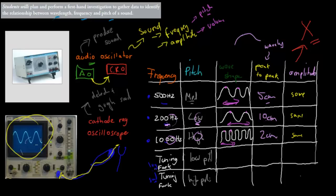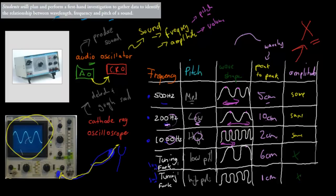You would look at the shape produced by the different tuning forks on the CRO. The low pitch produced a wave that looked like a wider shape, whereas a high pitch produced a more compressed one. You'd compare the two — that's the most important part. You would then measure the peak-to-peak again — that's the wavelength — so let's say one is six centimeters and the other is one centimeter.